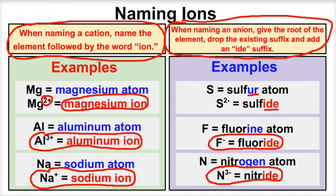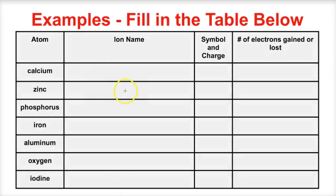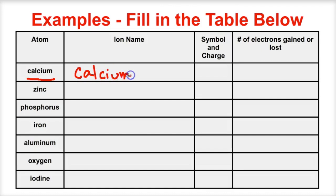Let's look at some examples. Pull out your periodic table and try to fill this chart in yourself. We have a calcium atom — it's a metal, so the ion name is calcium ion. Calcium comes from group two, so its symbol is Ca²⁺. That two-plus means this calcium atom has lost two electrons.